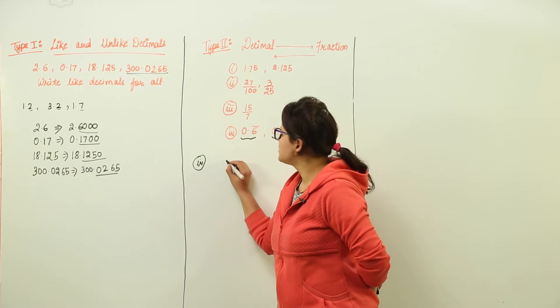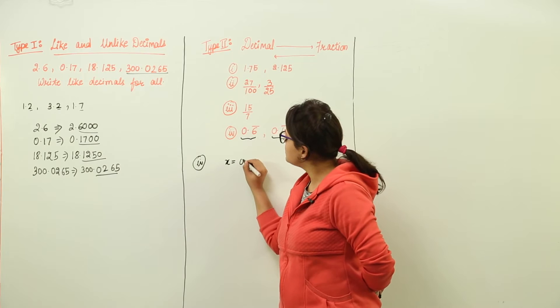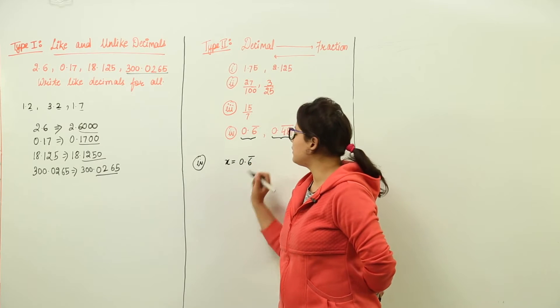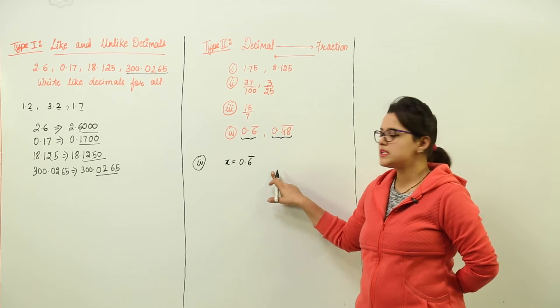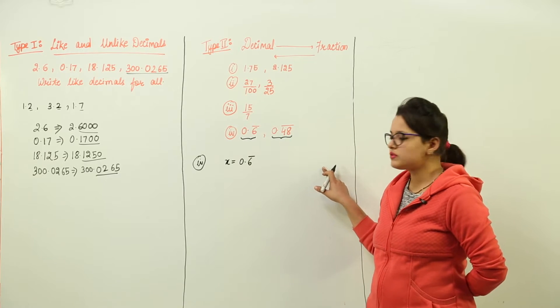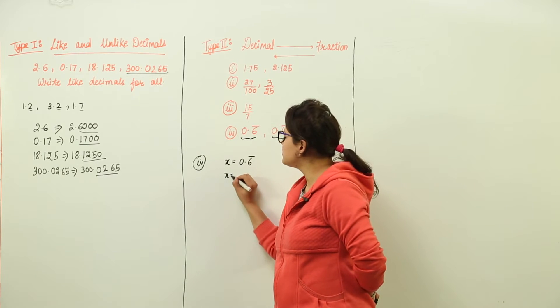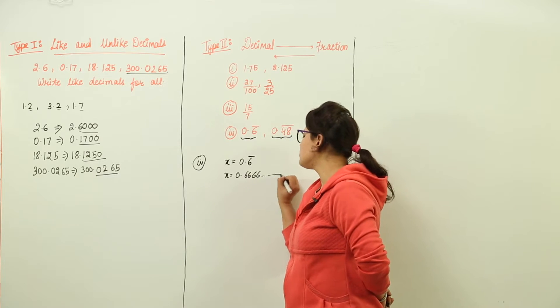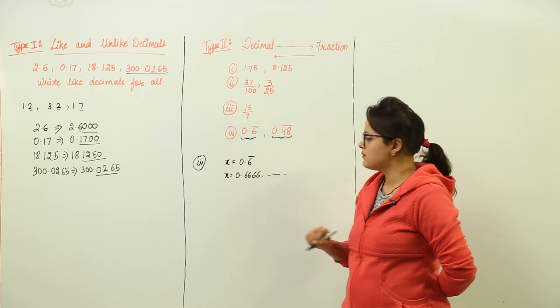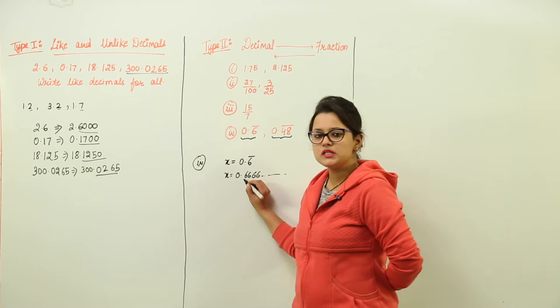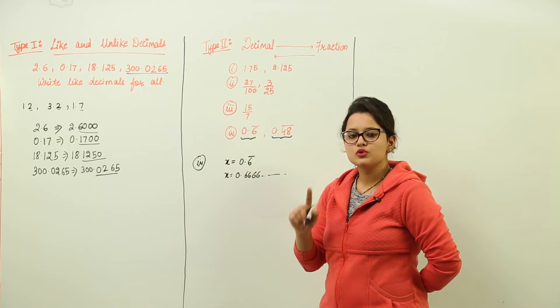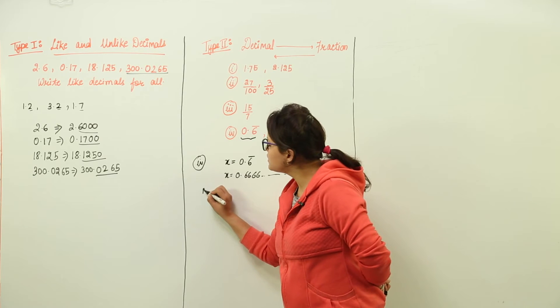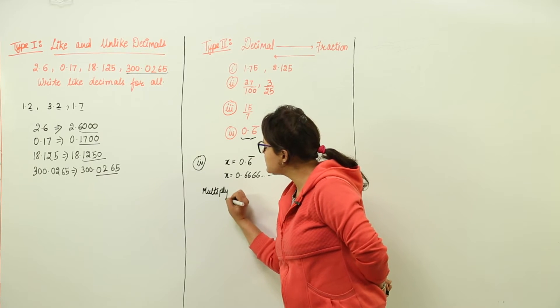So what we do for these? Let us write x equal to 0.6 bar. Now this bar represents that 6 is repeating infinite number of times. That means this can be written as 0.6666 and so on, infinite number of times. Now how many digits were repeating? One.